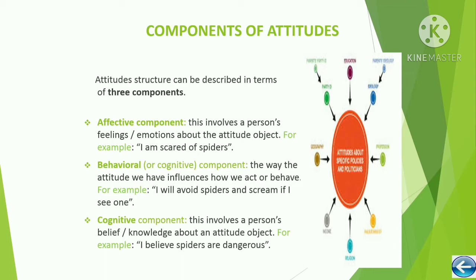The affective component involves a person's feeling or emotion about the attitude object — for example, 'I am scared of spiders.' The behavioral component is the way the attitude we have influences how we act or behave — for example, 'I will avoid spiders and scream if I see one.' The cognitive component involves a person's belief or knowledge about an attitude object — for example, 'I believe spiders are dangerous.'